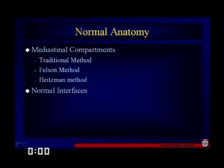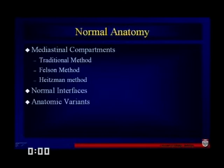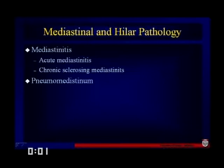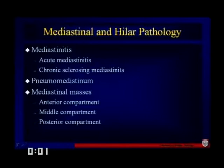I want to talk about normal interfaces because the visibility of normal interfaces like the anterior junction line and posterior junction line gives us a clue as to whether there's any kind of pathology. Then we'll talk about some anatomic variants, inflammatory lesions including acute and chronic mediastinitis, pneumomediastinum, and neoplastic pathology including mediastinal masses.